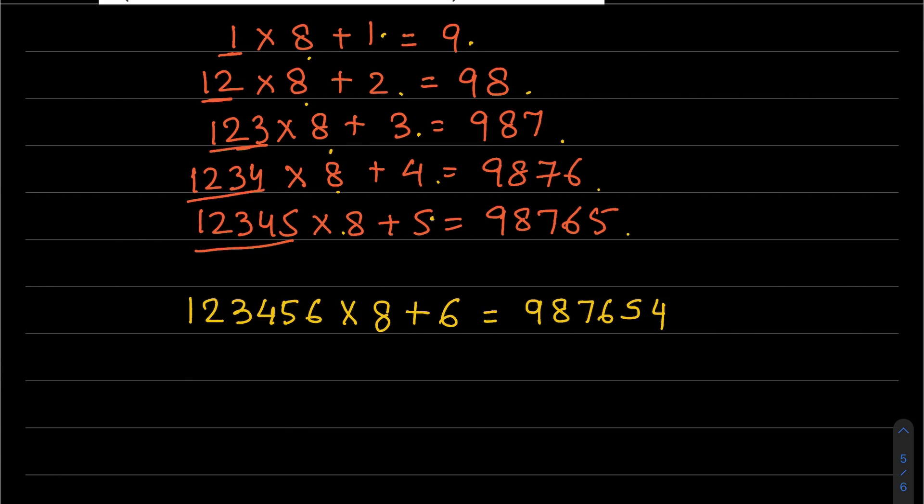1234567 into 8 plus 7 equals 9876543. If you like the video, please like, share, and subscribe. Thank you.